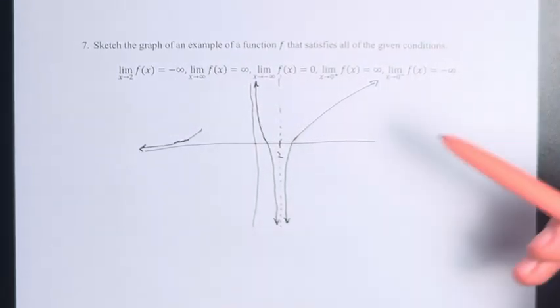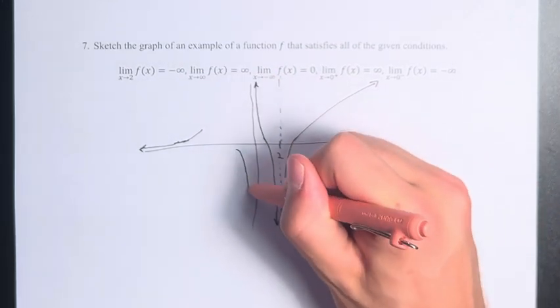And from the left, from the other side, it's going off to negative infinity, so it's kind of doing the opposite thing. It's going down.